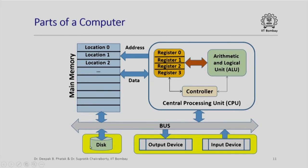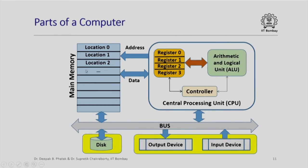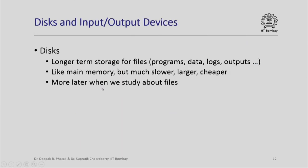The disk and input/output devices are connected on the bus. Disks are basically longer term storage for files — files could contain programs, data, logs, outputs, and so on. Disks serve a purpose much like main memory for storing and retrieving information, however they are much much slower than main memory. They also have much larger capacity and are significantly cheaper than main memory. So there is main memory, then there is the register file which is faster, smaller, and costlier, and then there is disk which is slower, larger, and cheaper than main memory. We will look at disks more later when we study about files.